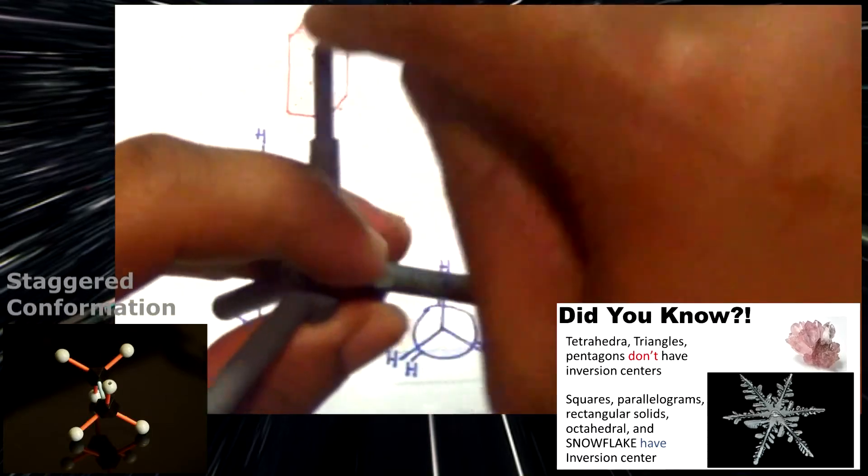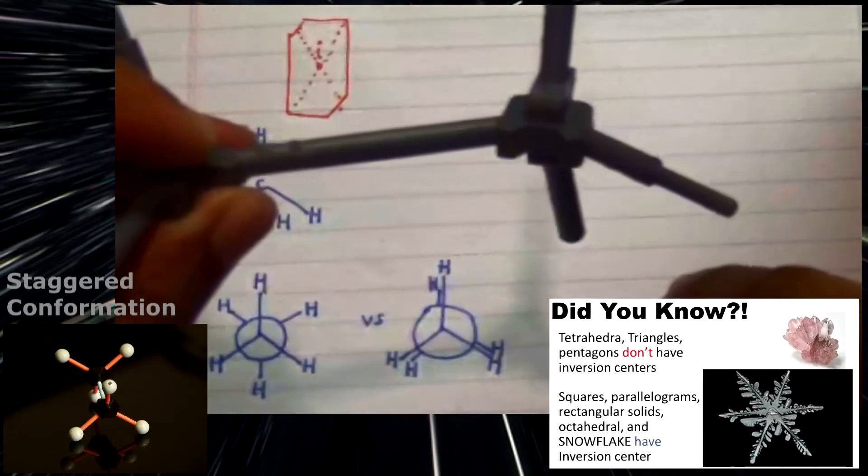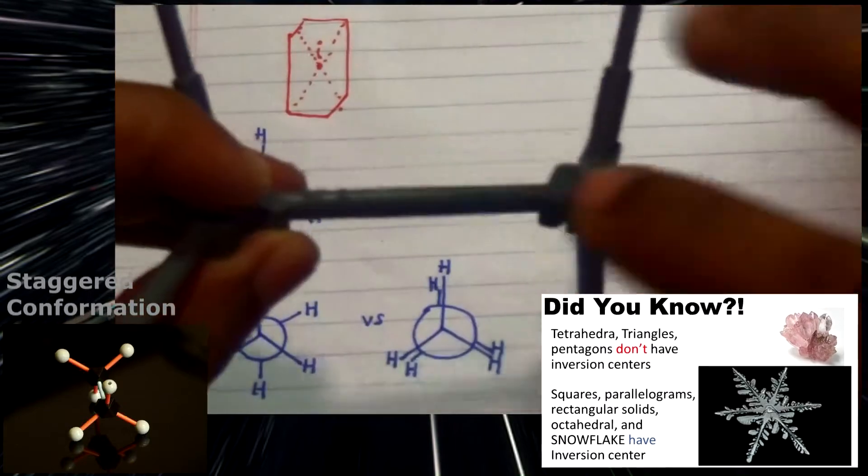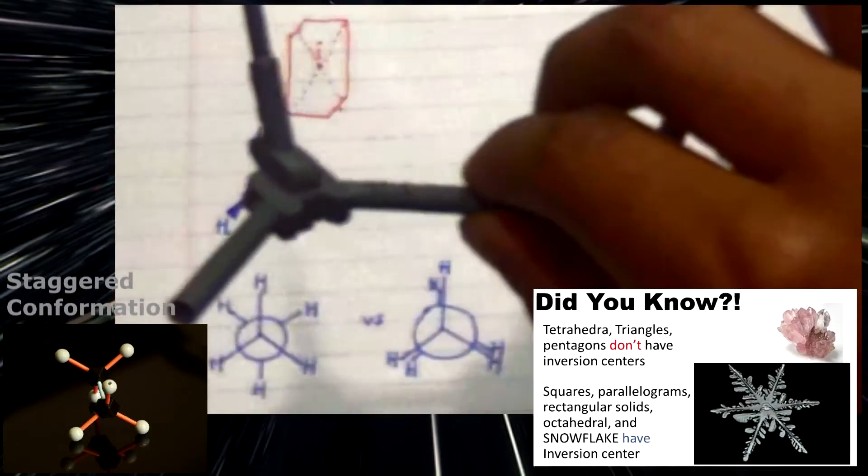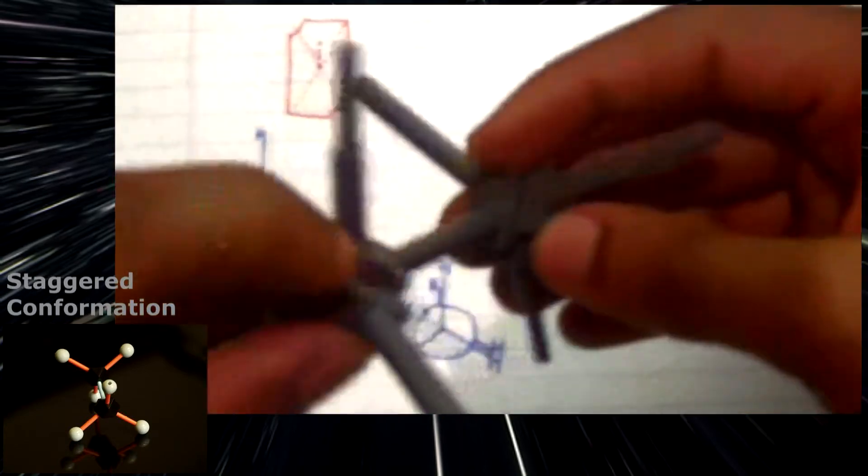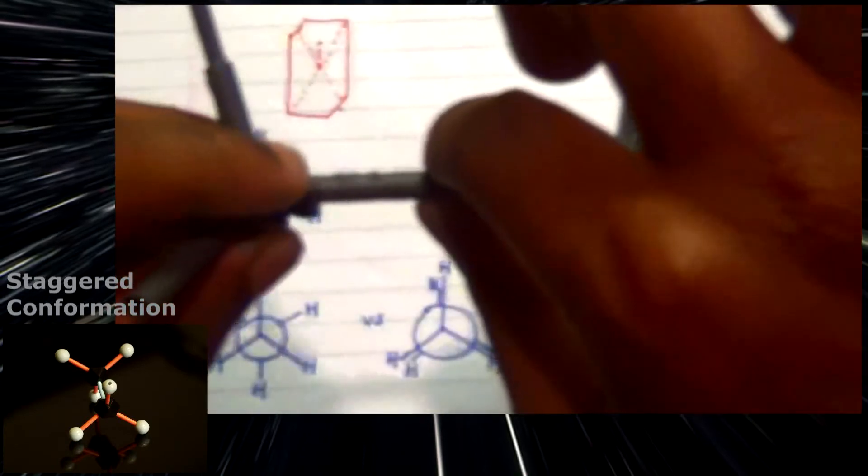However, the eclipsed doesn't have an inversion center because there is no diagonal line that aligns from one end of your bond to the other end of your bond. So for eclipsed, there is no inversion point.